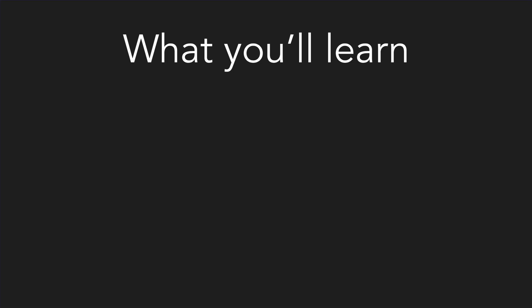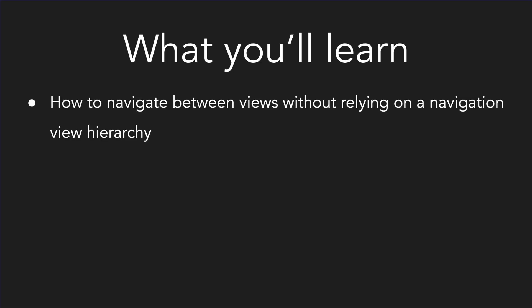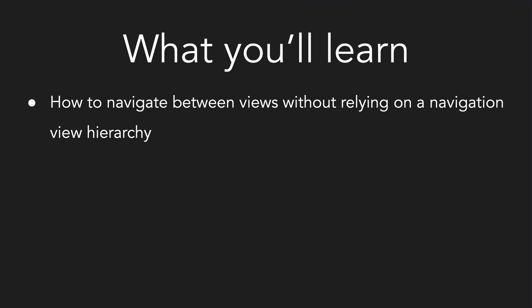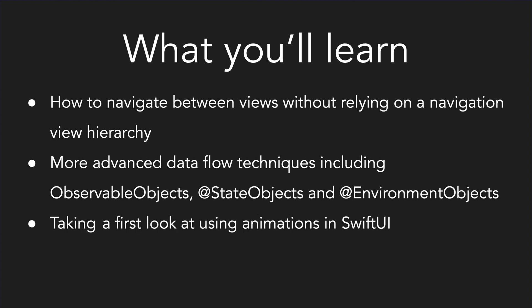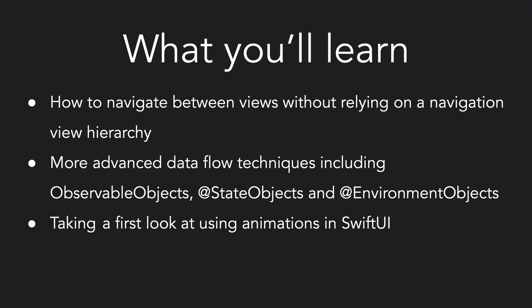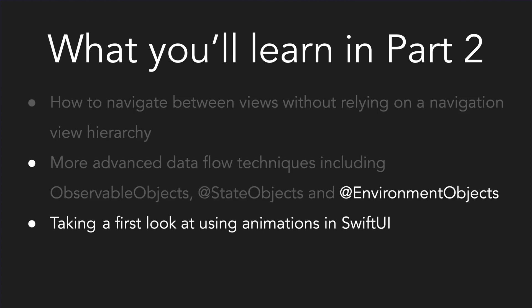In summary, here's what you'll learn in this series: how to navigate between views without relying on a navigation view hierarchy, more advanced data flow techniques including observable objects, state objects, and environment objects. Furthermore, we will take a first look at using animations in SwiftUI. In this part of the mini-series we will learn how to navigate between views using an observable and state object. In the next part we learn how to accomplish the same behavior more efficiently using an environment object and apply some nice navigation animations.